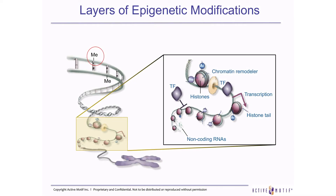Here you see the basic mechanisms for epigenetic modifications. We have DNA methylation at cytosine, but also chromatin changes for accessibility, due to different post-translational modifications at the level of histones. As a readout, we have a differential expression profile that relates to different biological processes and, of course, aging.